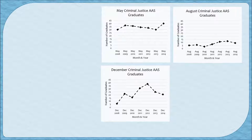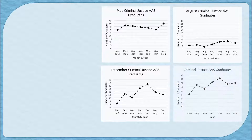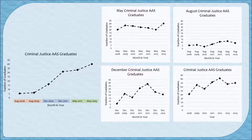A more appropriate display shows criminal justice graduates in May only, then August graduates — which are substantially lower — and December graduates, which vary wildly with a spike in 2010. Or we can look at all graduates combined, including May, August, and December. If we look at these four graphs, yes the number of graduates is increasing overall, but the total number of graduates is actually less in 2014 than it was in 2012 — definitely not what the original graph suggested.